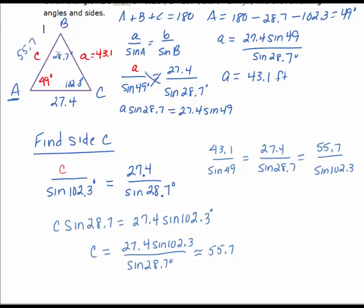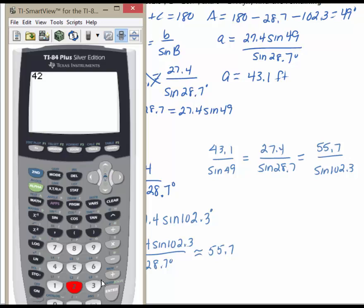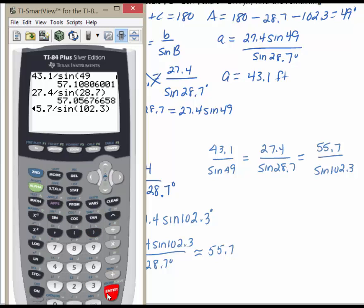So we'll put these three values in our calculator, and they're going to be off slightly because we rounded, but we can still get a decent idea if we've done this correctly. So 43.1 divided by the sine of 49, and get our value. Then 27.4 divided by the sine of 28.7, and enter. And then 55.7 divided by the sine of 102.3, and so our values are very close. They're off in the tenths place, and we did round to the nearest tenth, so that just gives us a decent idea if we did the problem correctly or not.